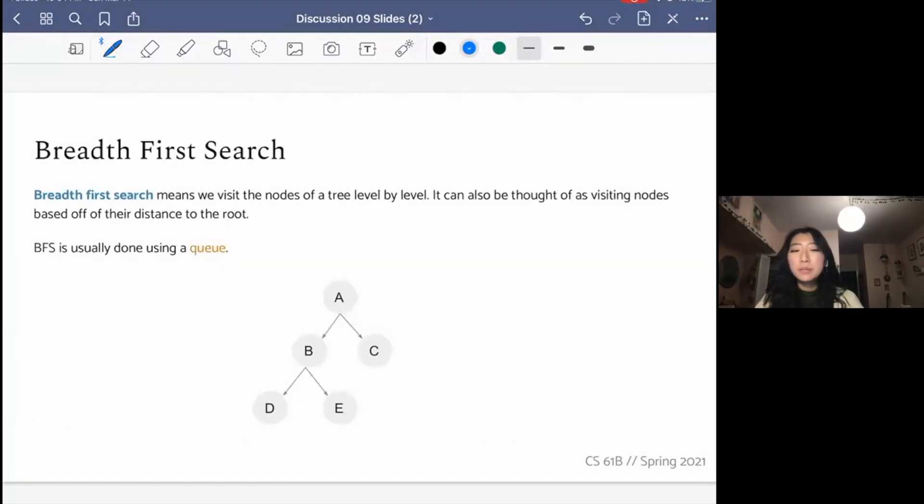Breadth-first search is something we can apply to both graphs and trees. For trees, that means we're basically looking through the tree level by level. But in general, we can think of breadth-first search as visiting nodes based off their distance from the source. So specifically, let's say we're taking A as our source or our starting point.